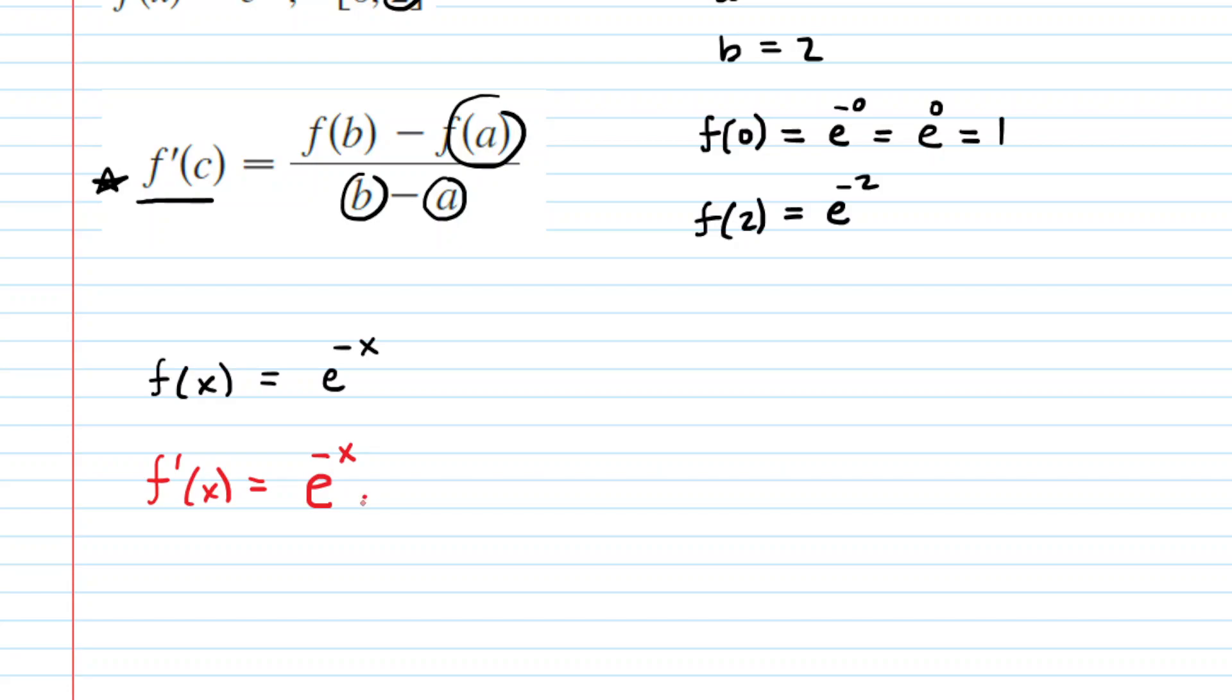You basically recopy that exponential function, so we'll have e to the negative x, but then the chain rule sort of kicks in here, and you have to multiply by the derivative of this power up here. So in other words the derivative of negative x.